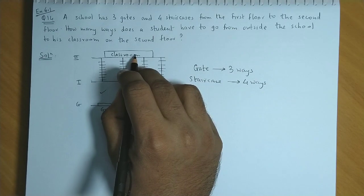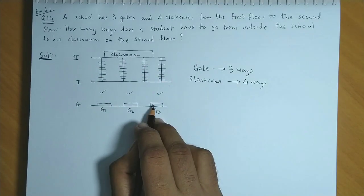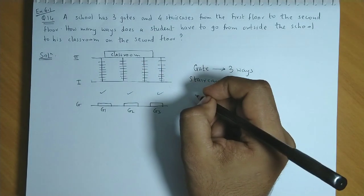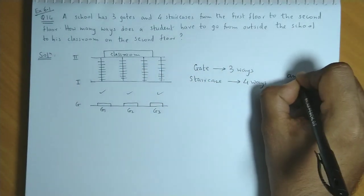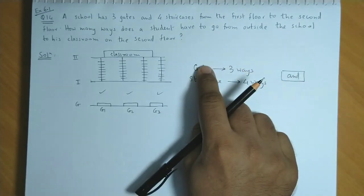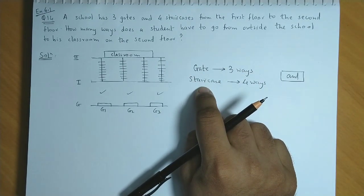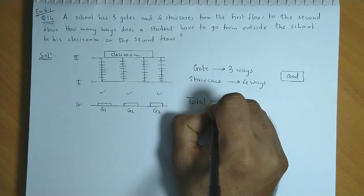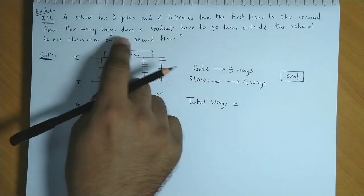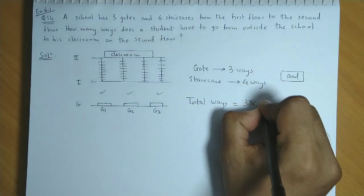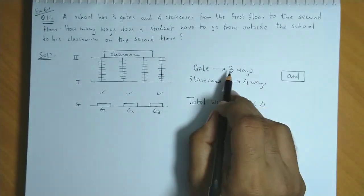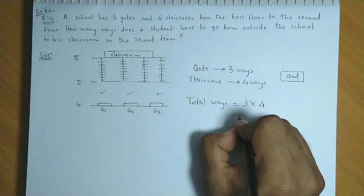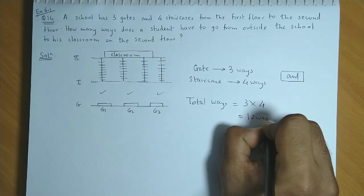To reach the classroom, he has to select a gate and then a staircase. So this is the case of 'and'. He has to select gate and staircase. And indicates multiplication. So the total ways of reaching the classroom on the second floor will be three into four. Gate and staircase, that's three into four. So the answer is twelve ways.